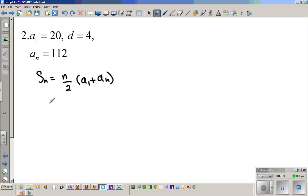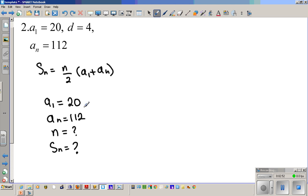Let's list the variables that we have. So we know that A1 is 20, AN is 112, N is unknown, and SN is unknown. So we have a problem here. We have one equation, two unknowns, that is excessive. We need to have only one unknown in order to be able to solve this.